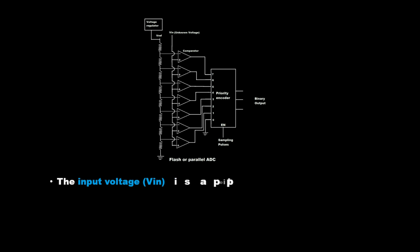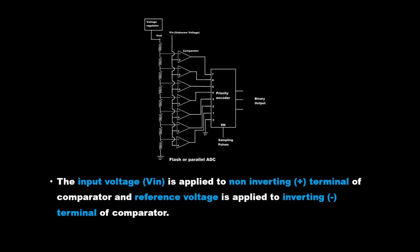The input voltage VIN is applied to the non-inverting (plus) terminal of the comparator, and reference voltage is applied to the inverting terminal of the comparator.